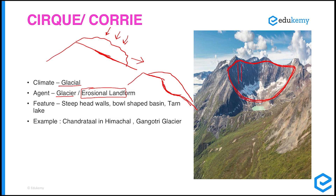A cirque has steep side walls and a basin at the center. Over time, when the glacier melts, water accumulates in the basin, forming tarn lakes. Sometimes rainwater also collects there. The best example is Chandratal in Himachal Pradesh. The Gangotri glacier also has many cirques and corries.